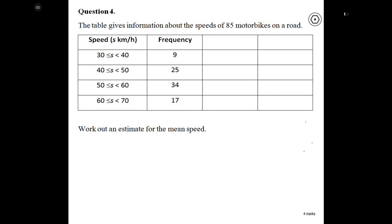The table gives information about the speeds of 85 motorbikes on a road. You can see the speeds on the left-hand side, which are grouped, and then you've got the frequency for each one. So we've got 9 people who have gone between a speed of 30 and 40. A very straightforward, basic, estimated mean question.